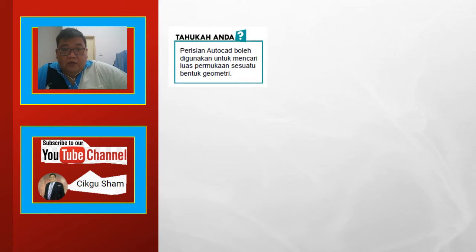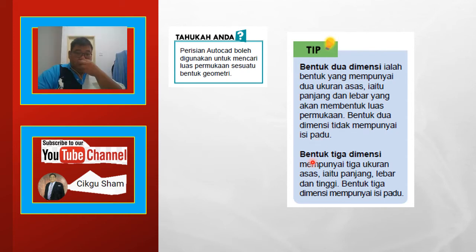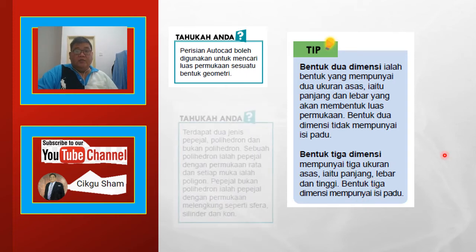Tahukah anda, perisian AutoCAD boleh digunakan untuk mencari luas permukaan sesuatu bentuk geometri. Bentuk 2 dimensi ialah bentuk yang mempunyai 2 ukuran asas iaitu panjang dan lebar, yang membentuk luas permukaan. Bentuk 2 dimensi tidak mempunyai isi padu.